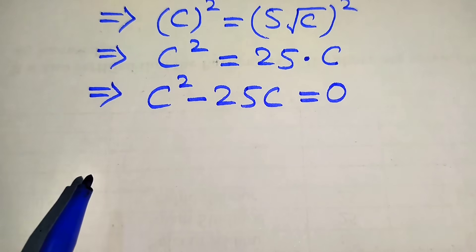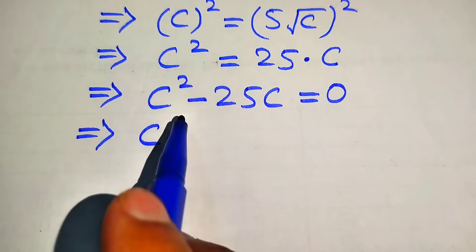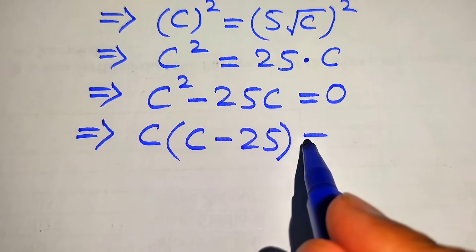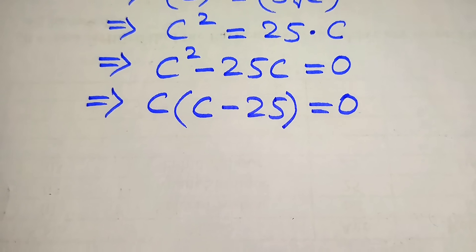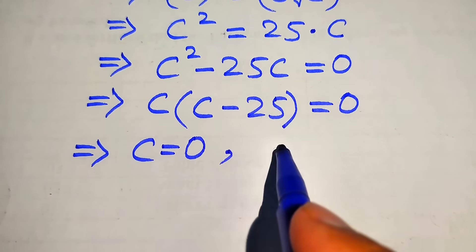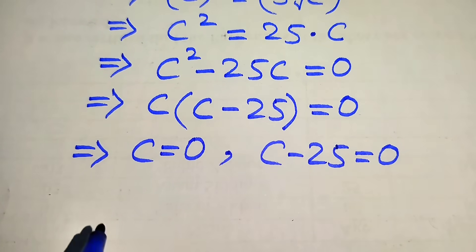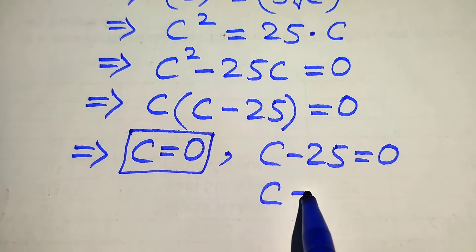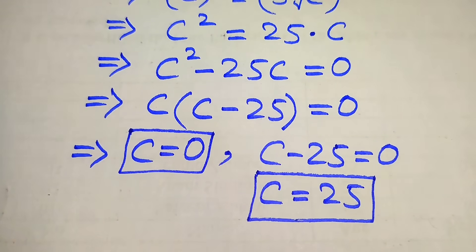Both terms involve c, so we take c as a common factor. After taking common c, we get c times (c minus 25) equals 0. We split this into two cases: the first case gives c equals 0, and the second case gives c minus 25 equals 0, which means c equals 25. So from the first method we get two roots of the given equation.